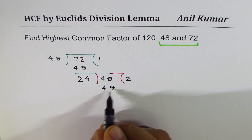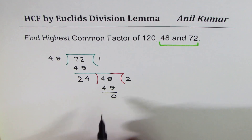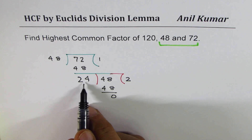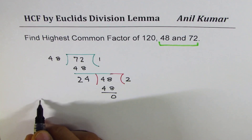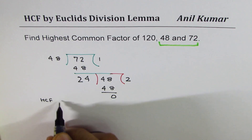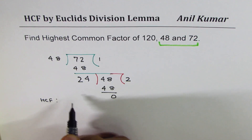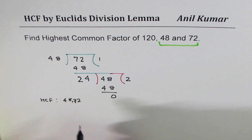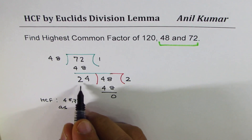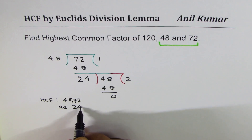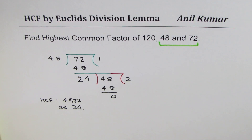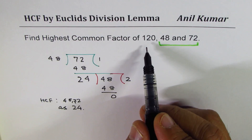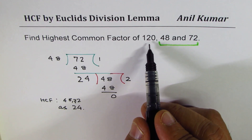24 times 2 is 48, so the remainder is 0. Once you get 0 as the remainder, the previous divisor is the highest common factor. So the highest common factor between 48 and 72 is 24.